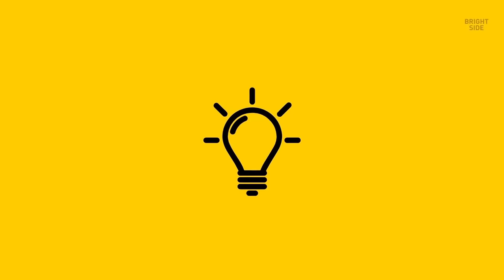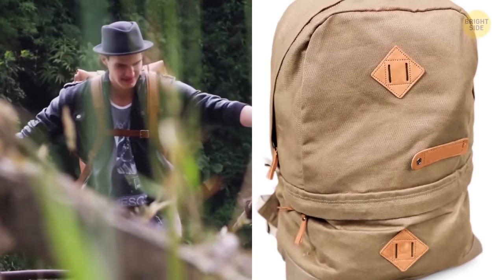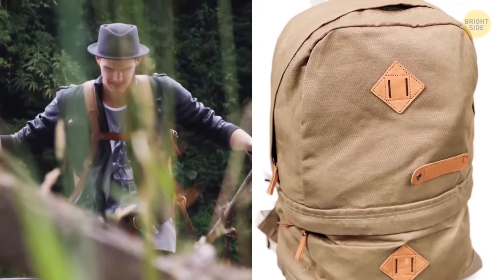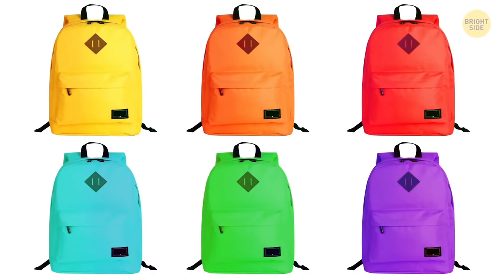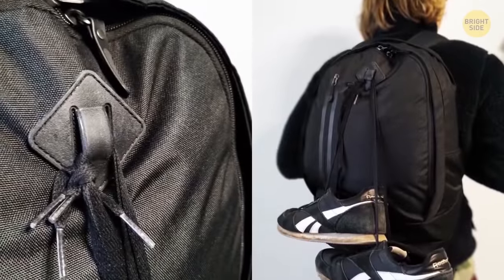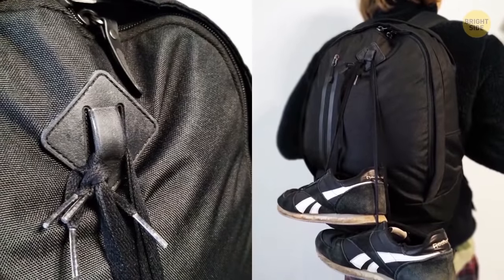These diamonds were originally placed only on traveler backpacks and were designed to carry ropes. Now you can find such slits on pretty much every backpack. Why not use them to carry a bottle of water, an umbrella, or a pair of sneakers?